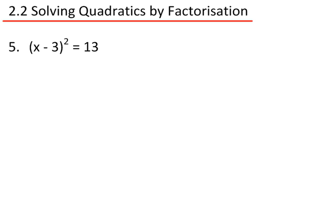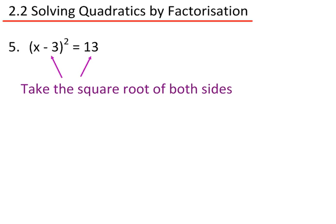The last question: x minus 3 squared equals 13. This is easy, because we just need to take the square root of both sides to get rid of the squared part on the x minus 3.